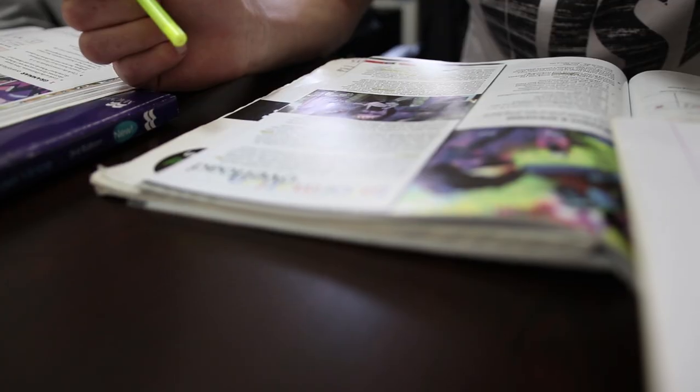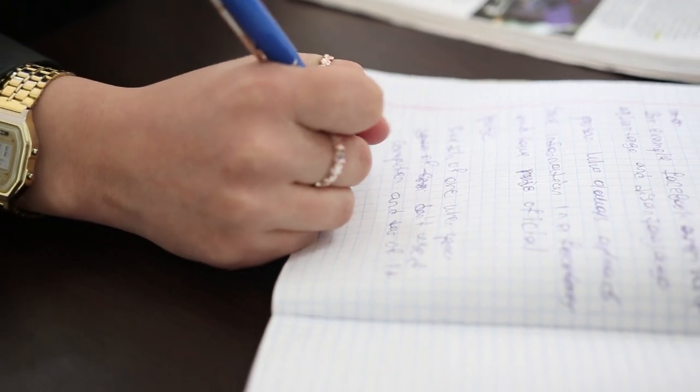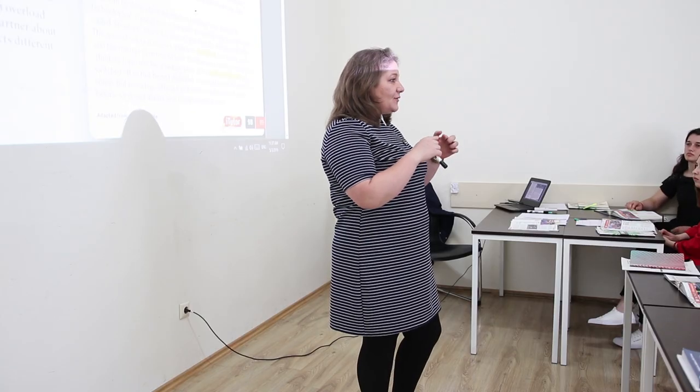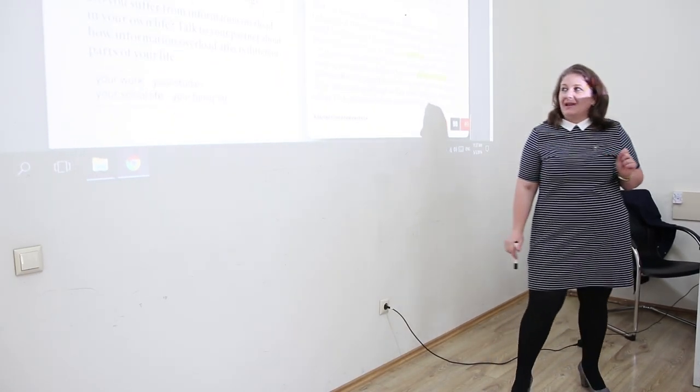Look at this exercise. Here we have three sentences. Read these three sentences and circle the correct one. Information overload — they enjoy their job less, of course, when you use a computer. Talk to your partner: do you suffer from information overload in your life?